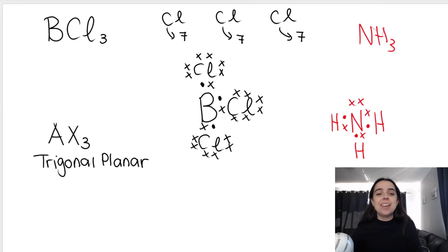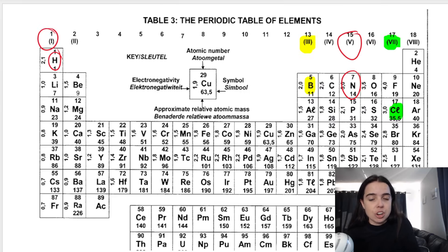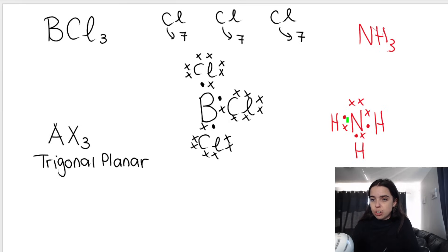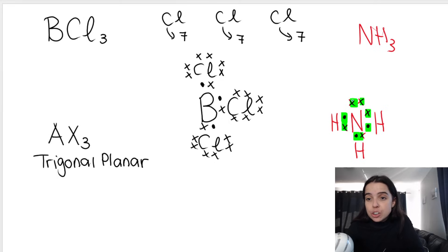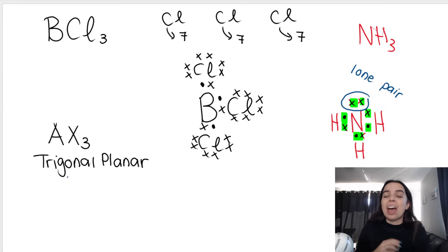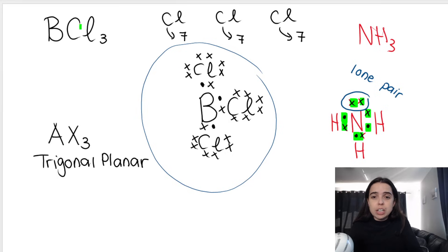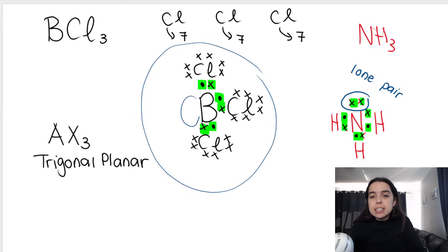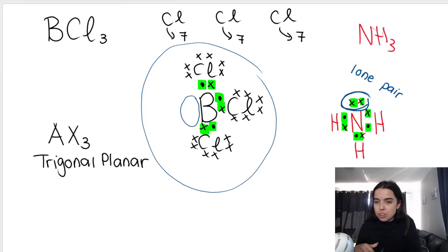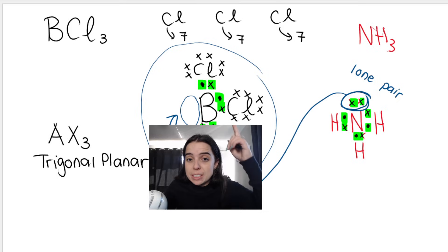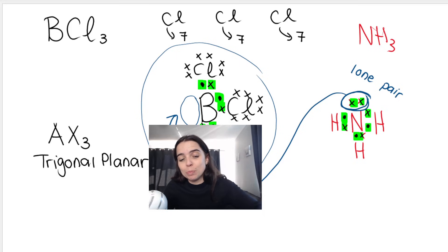What ammonia has is a lone pair of electrons — a pair that is not a bonding pair, with no other atom attached there. Boron in BCl3 doesn't follow the octet rule — it only has six electrons around it. That means boron has space for two more electrons. So the lone pair from ammonia can be shared with boron's empty orbital. That is why NH3 can form a dative covalent bond with BCl3.